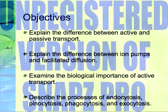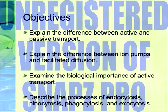We need to describe the different types of active transport. We've already talked about the different types of passive transport. Finally, we need to examine why active transport is important and be able to understand what types of organisms undergo those different processes. If you need to copy these objectives down, go ahead and press pause. Otherwise, we're going to keep going.